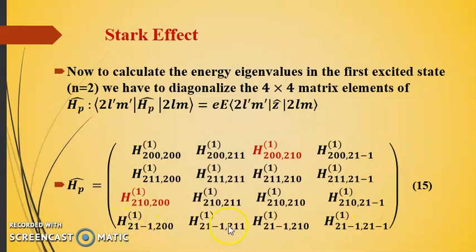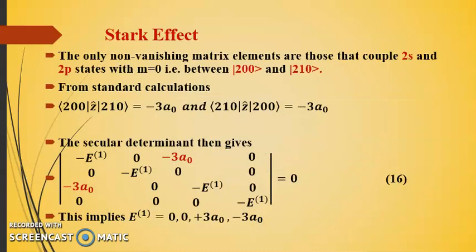Now we have to use the condition where we have m' equal to m. We have 0, 0. This is m', this is m. Again, this is m, this is m'. And we have the states 2l' and 2l. So it is 2, 0, 2, 1. And the other side we have 2, 1 and 2, 0, 0. So these are the two states which are the non-vanishing matrix elements because they couple 2s and 2p state with m equal to 0.